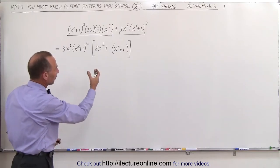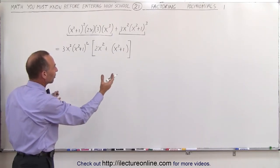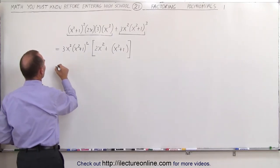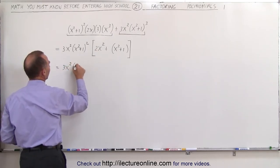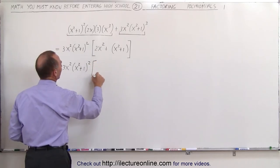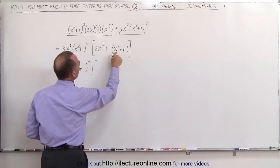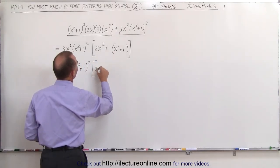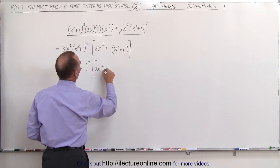Now of course I don't need the parentheses so I can get rid of parentheses and combine like terms. So this now becomes 3x squared times x squared plus 1 quantity squared, and here in the brackets I have a 2x squared plus an x squared that gives us 3x squared plus 1.